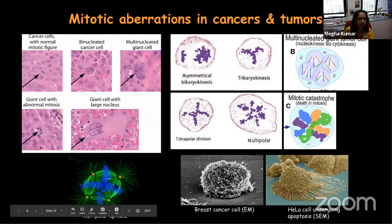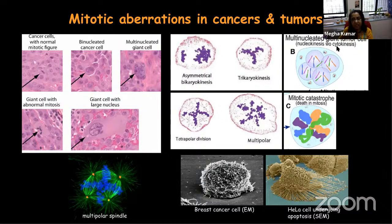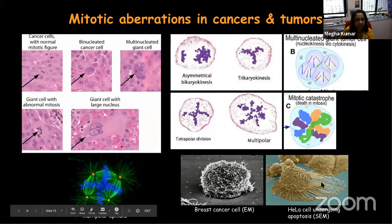One example is the multipolar spindle defect — instead of two poles, you get four poles. This will result in separation of chromatin in an abnormal condition, which will be asymmetric by karyokinesis, meaning asymmetric division of DNA components, possibly into two or three. Tetrapolar means four and multipolar goes into many directions. All this results in a tumor cell which has multiple DNA components. These are images of other cancers imaged by scientists — a breast cancer cell and a HeLa cell undergoing apoptosis, with all the projections coming out.